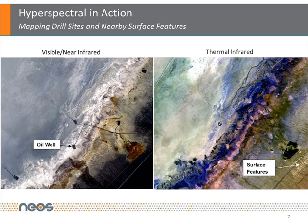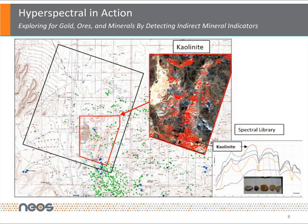Oil wells are easily identified on the left, while some of the surface features become more prominent in the thermal infrared, shown on the right. Mineral exploration is another important use of hyperspectral imagery. Rather than looking for something such as gold on the earth's surface, NEOS can detect the mineral indicators that are commonly associated with gold. Shown here is the clay kaolinite.